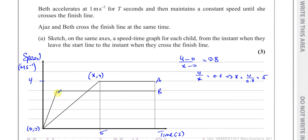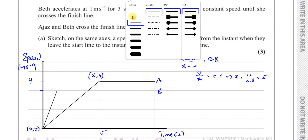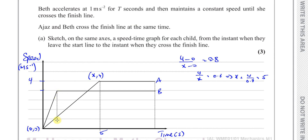We don't know what Beth's maximum speed is, but we'll call the time she takes to reach it T — as defined in the question. Let's call her maximum speed VB. That completes the sketch of the speed-time graph for both children.